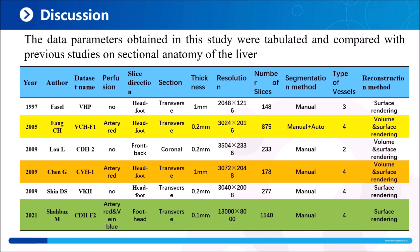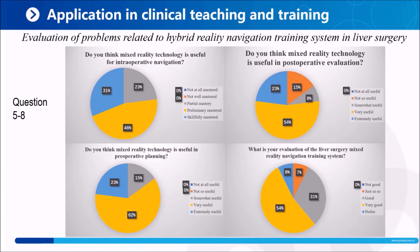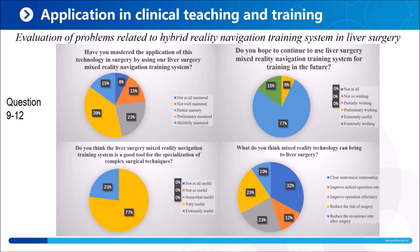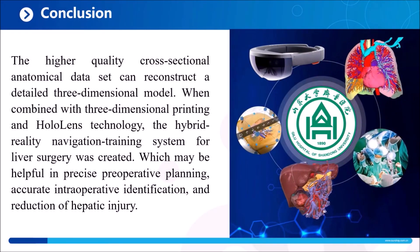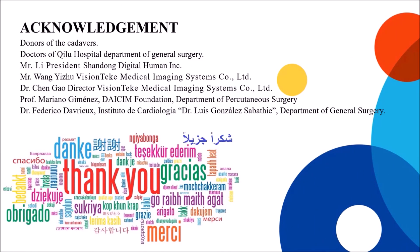In conclusion, the higher quality cross-sectional anatomical dataset can reconstruct a detailed three-dimensional model. When combined with three-dimensional printing and HoloLens technology, the hybrid reality navigation training system for liver surgery was created, which may be useful in precise pre-operative planning, accurate intraoperative identification, and reduction of hepatic injury. Thank you.